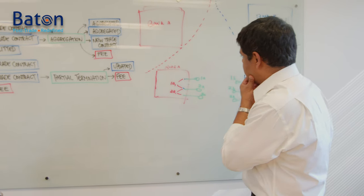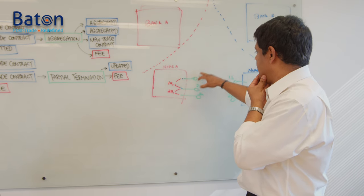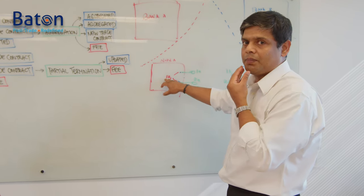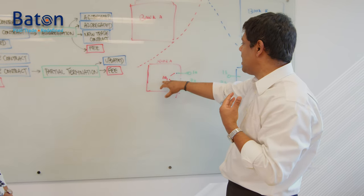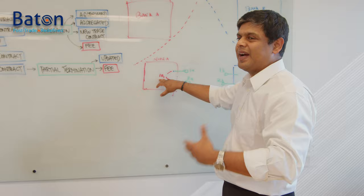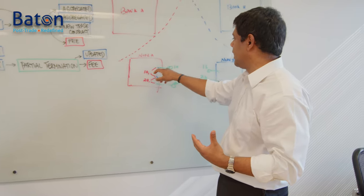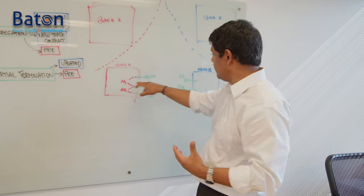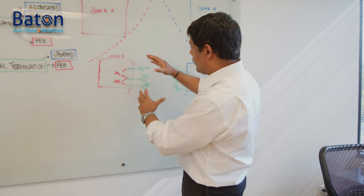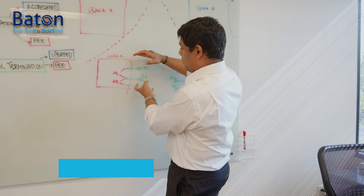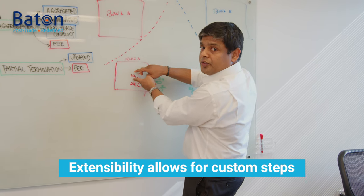Let's say Node A comes and says: after I do my trades, I have to do a custom step that is only for Bank A and very different from Bank B. For example, I have to run a check against my internal systems to make sure the data is in sync. That custom step may not be required for Node B. You need to be able to take the software a provider has built and extend it to add a custom step.